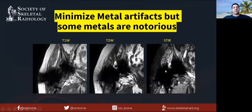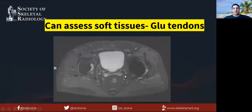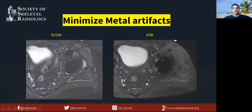Some metals are notorious and create a lot of artifacts. Using the STIR sequence can reduce these artifacts. You can also evaluate tendons and soft tissues that were obscured on other images due to artifacts.